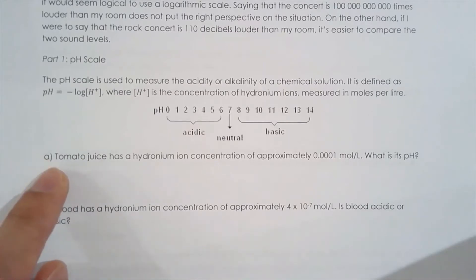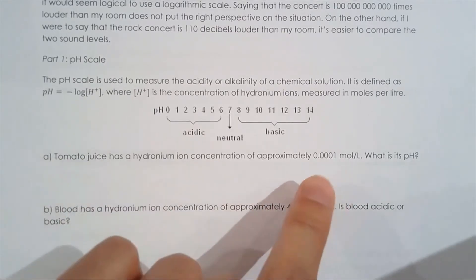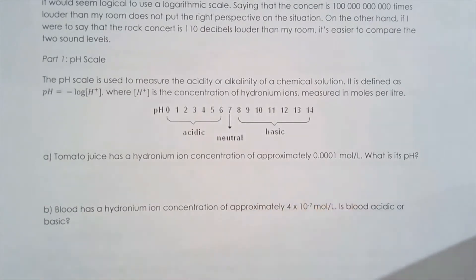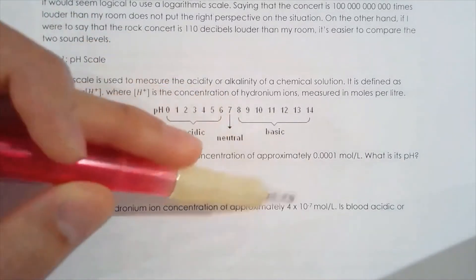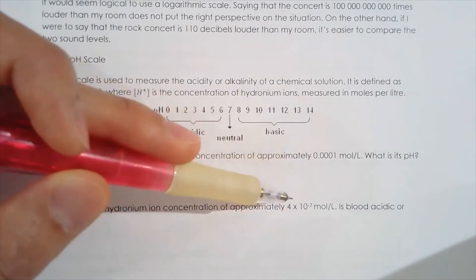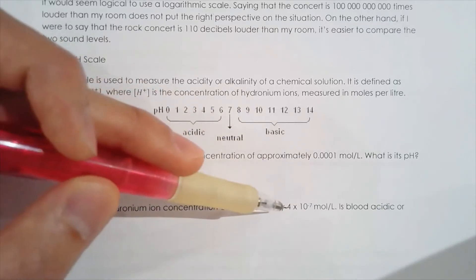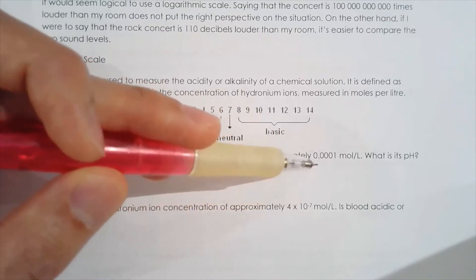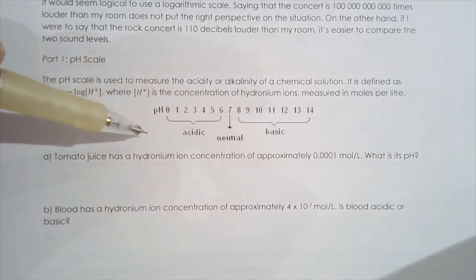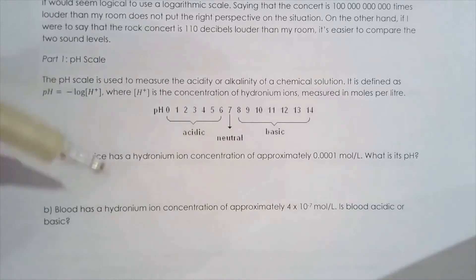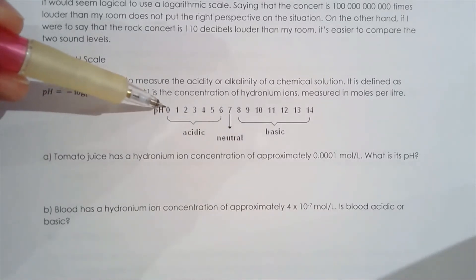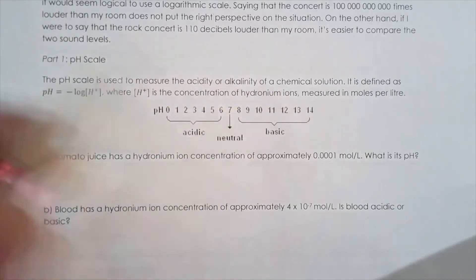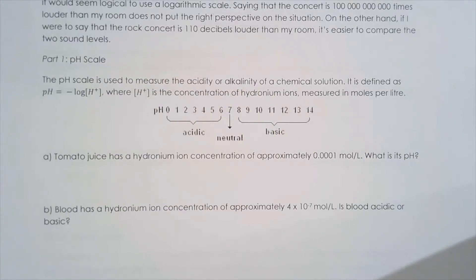If I didn't tell you that this was tomato juice and just showed you a concentration of 0.001 moles per liter, it's hard to understand whether this solution is safe to consume or not. We can also have another solution with a much lesser concentration of hydronium ions — 4 times 10 to the negative 7 moles per liter. We see there's a very big range of values. By using this logarithmic scale, we can condense and interpret the acidity of solutions using numbers from 0 to 14, with 7 being neutral, less than 7 acidic, and greater than 7 basic.